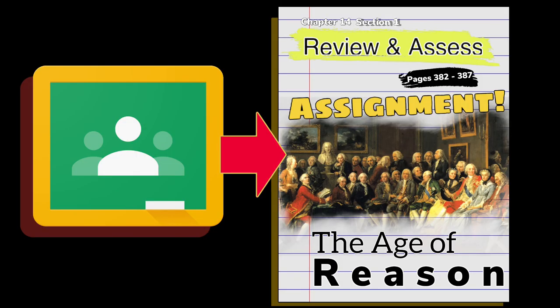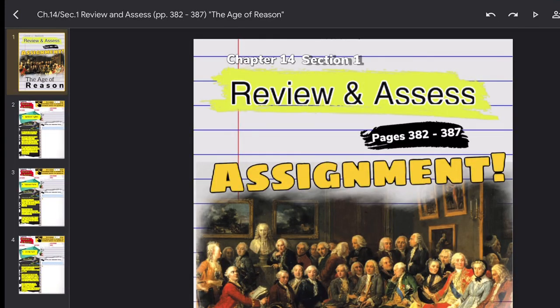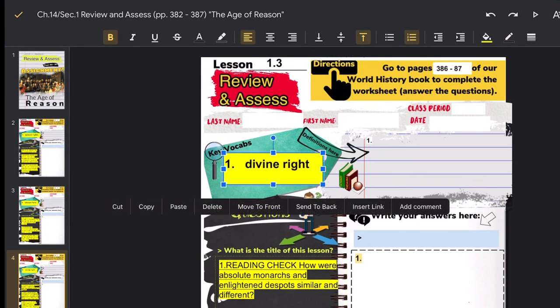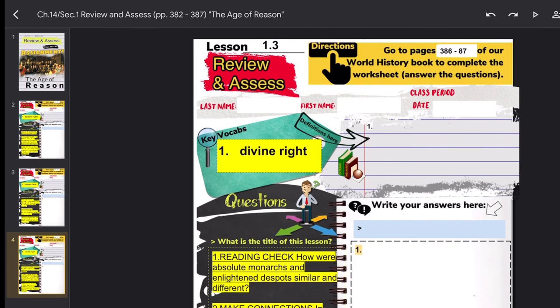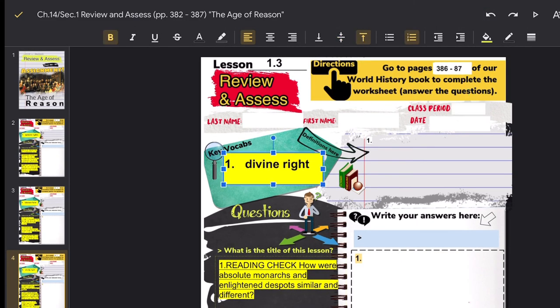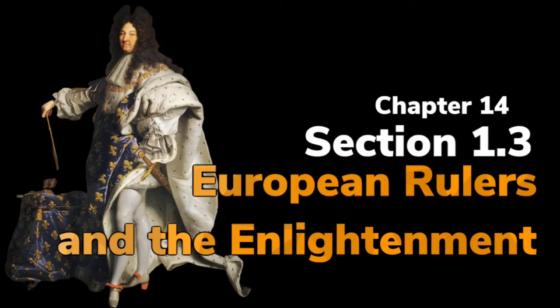Go to our Google Classroom and fill in your last name, first name, class period, and date. Don't forget to put the definition of the key vocabulary word, which is Divine Right. Put the title of the lesson and answer the Review and Assess questions that I just read. Write in complete sentences using your own words, and of course put the correct answers to those questions. That's the last lesson for Chapter 14, Section 1, The Age of Reason — European Rulers and the Enlightenment.